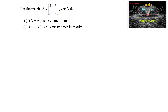For the matrix A equal to the given 2 by 2 matrix A = [[1,5],[6,7]], verify that A plus A transpose is a symmetric matrix and A minus A transpose is a skew-symmetric matrix.